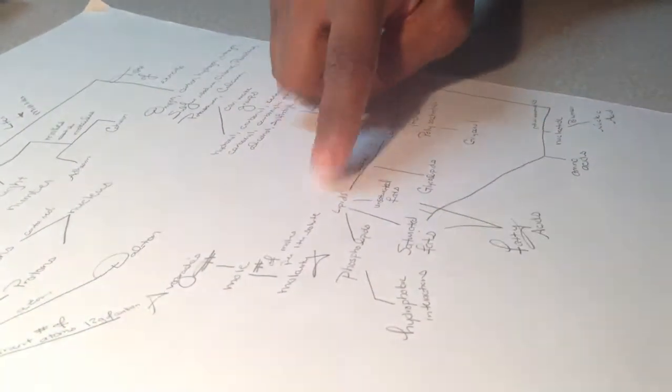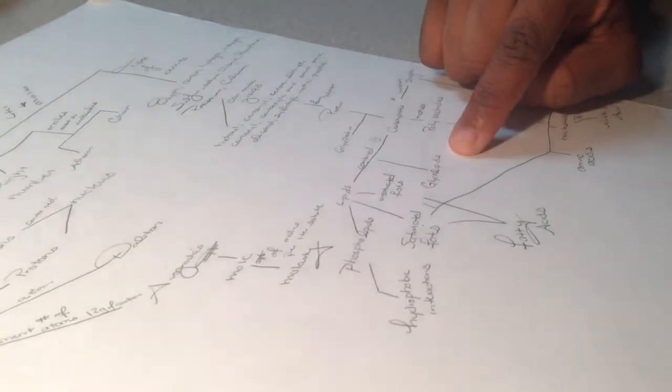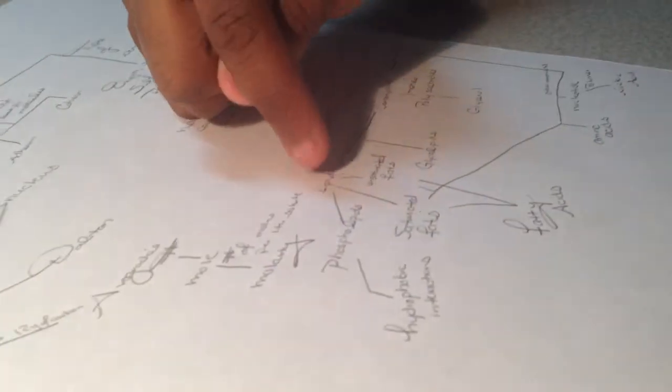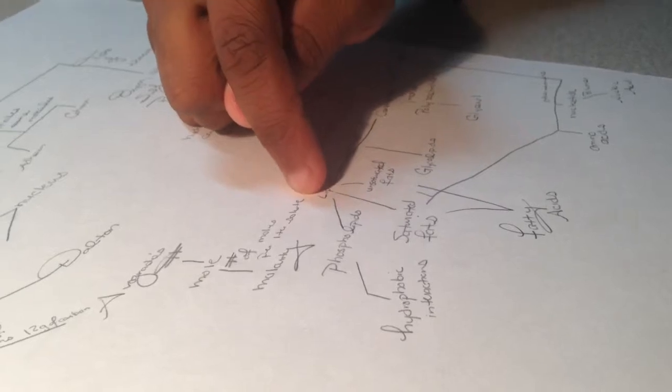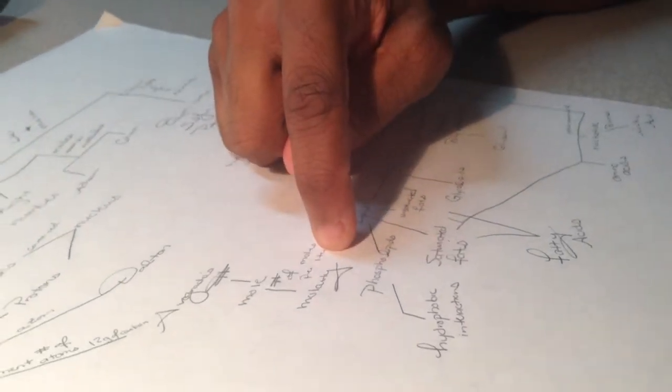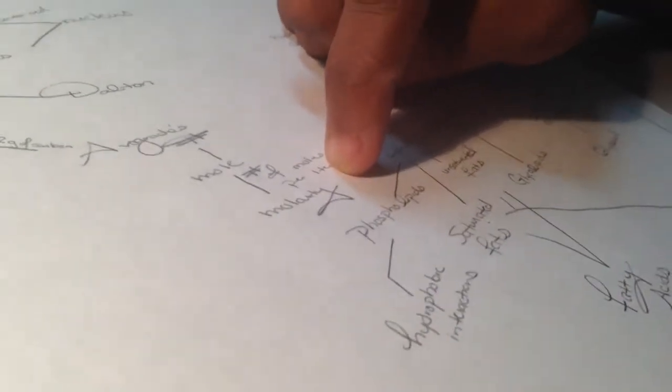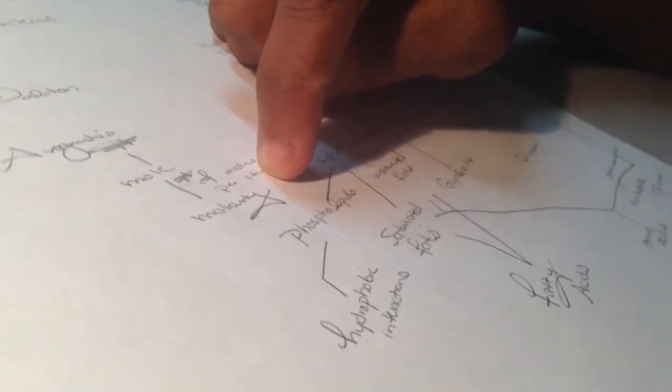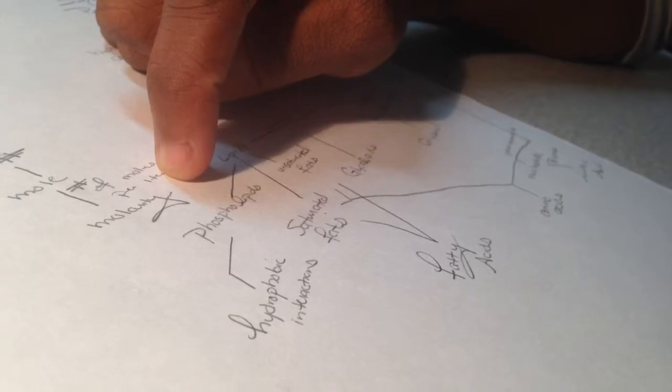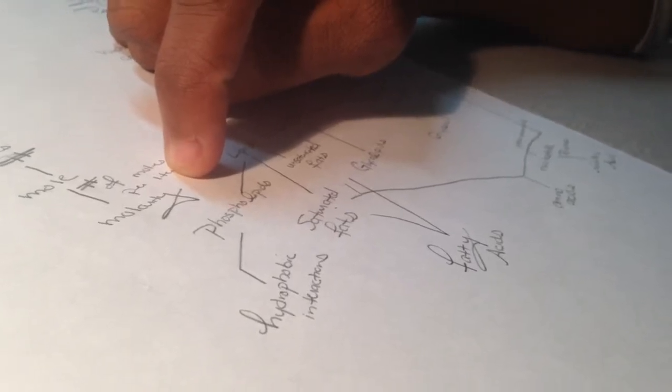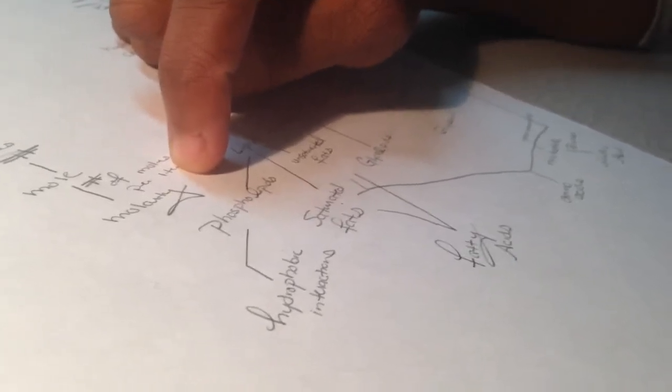When carbohydrates are combined with lipids you get glycolipids. From lipids you also get phospholipids, which have the hydrophobic and hydrophilic head. The hydrophobic is when it's afraid of water, so it's facing away from the water. The hydrophilic head is not afraid of water.